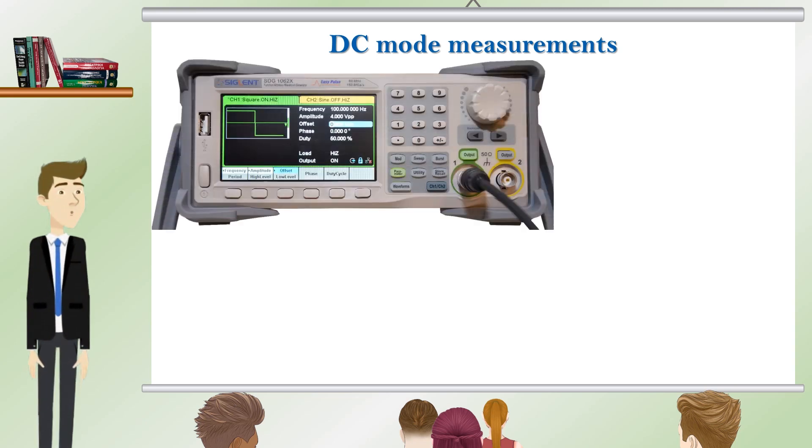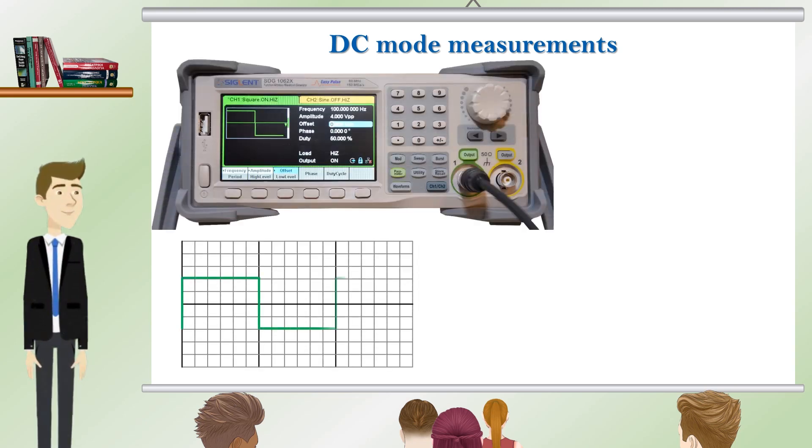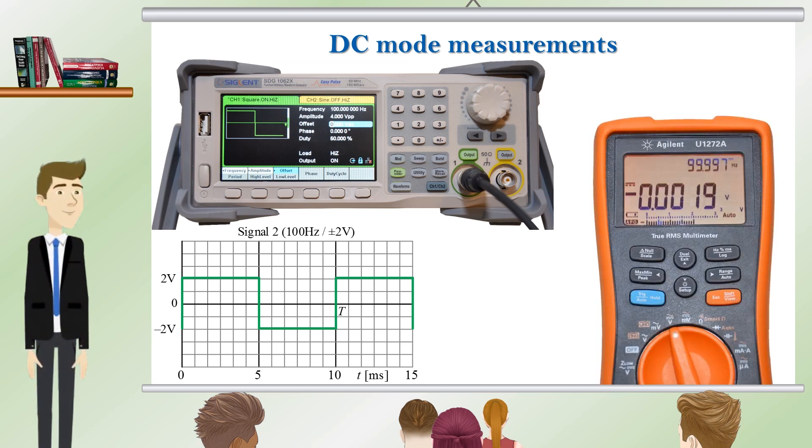We modify the pulse from the function generator as shown, signal 2. The average value of the signal is 0 volts because the positive area is equal to the negative area.